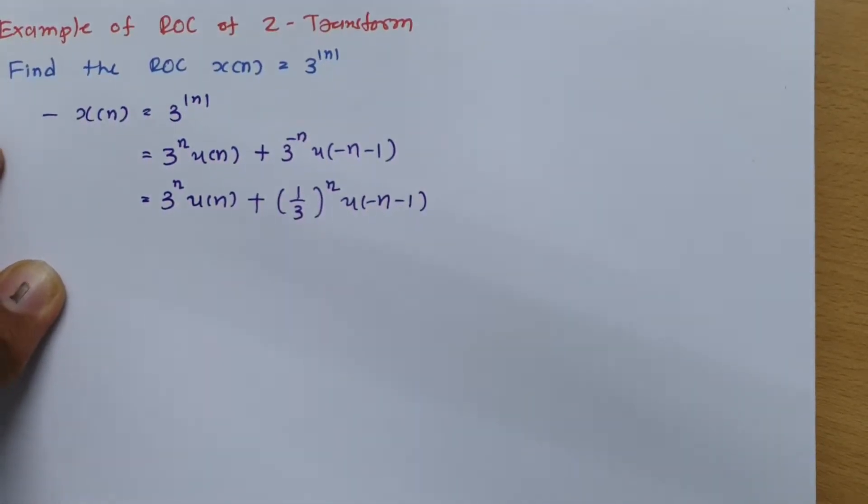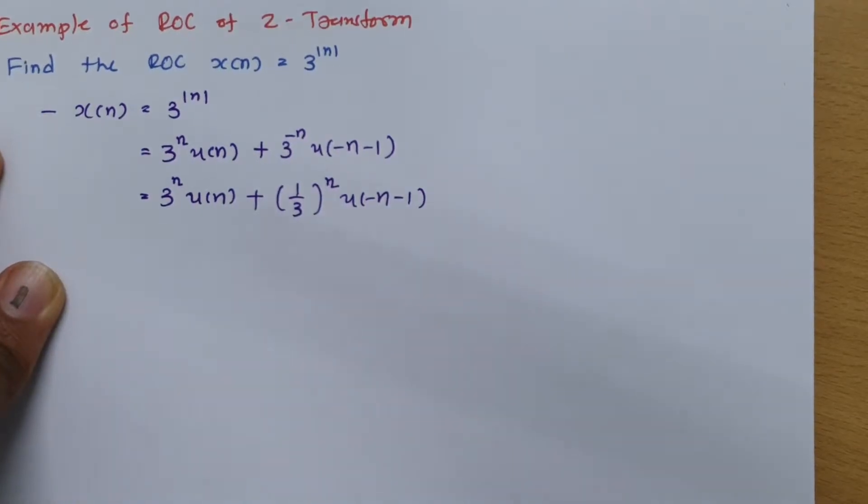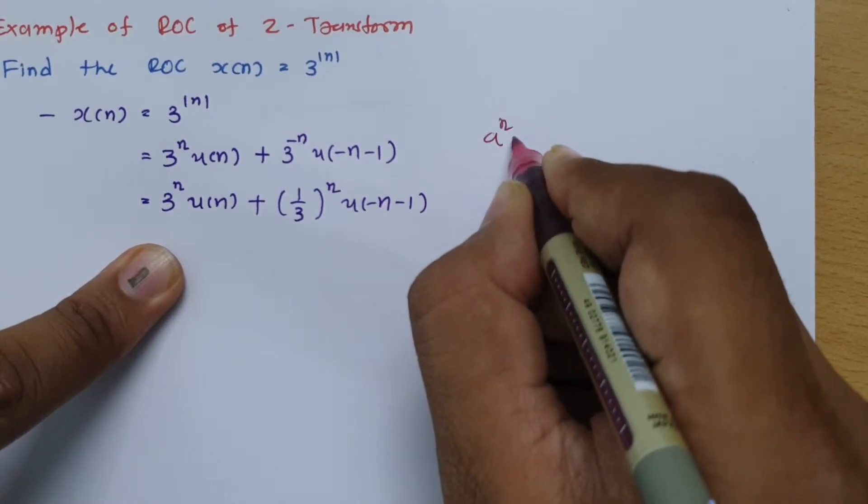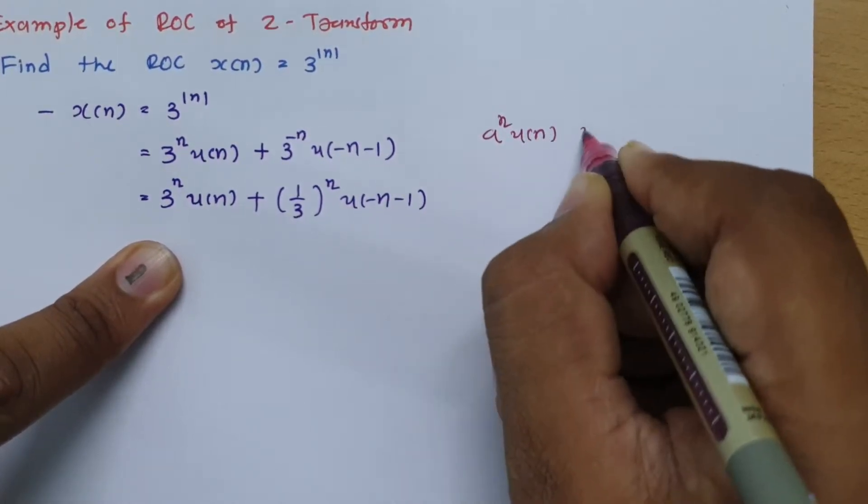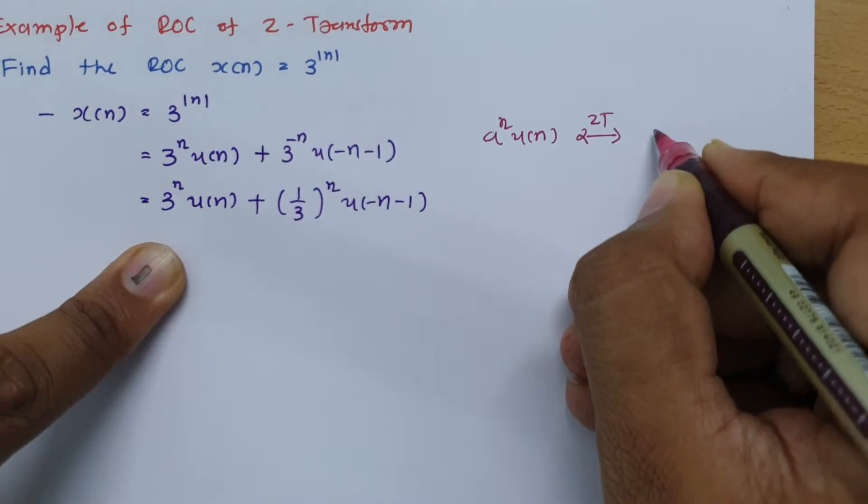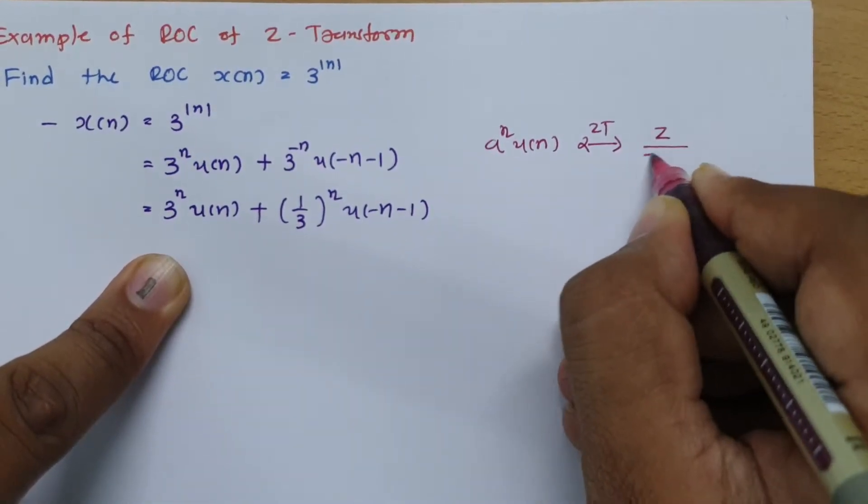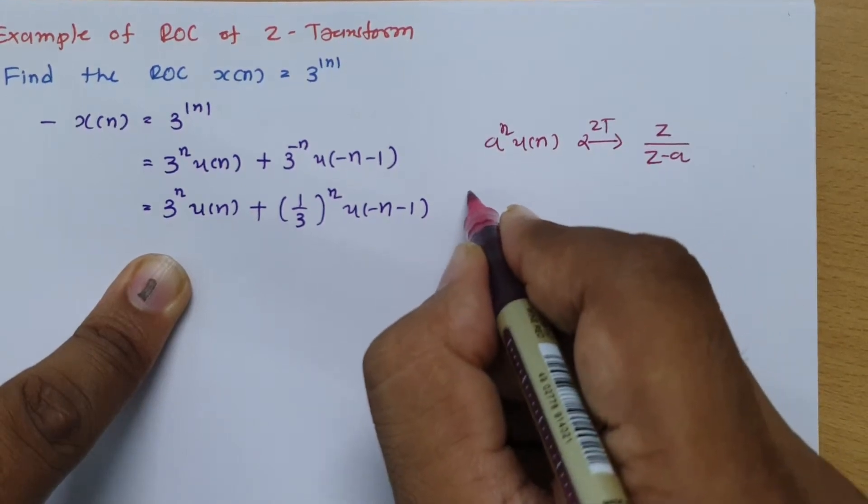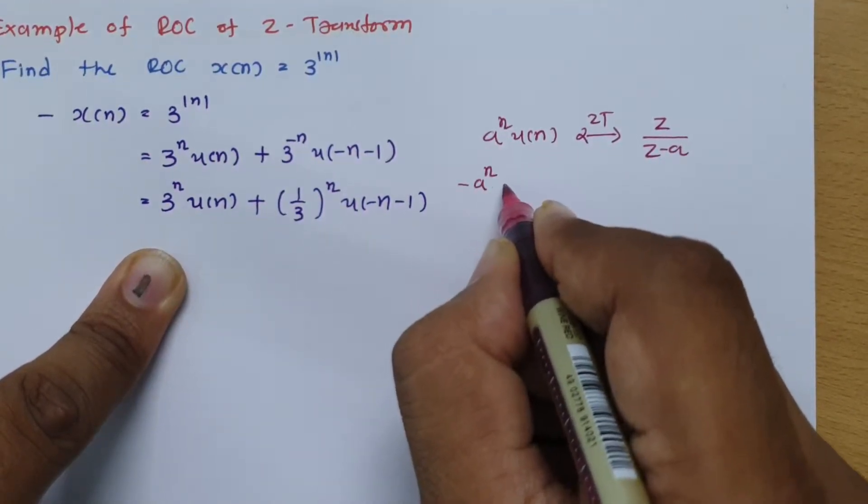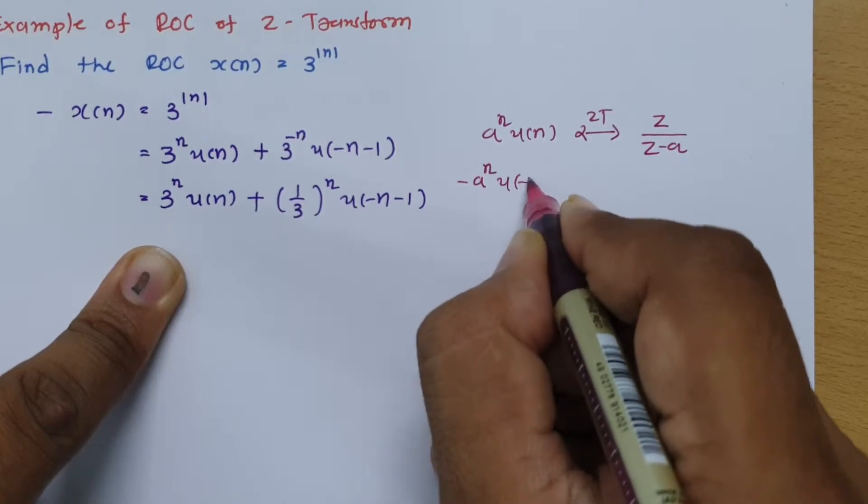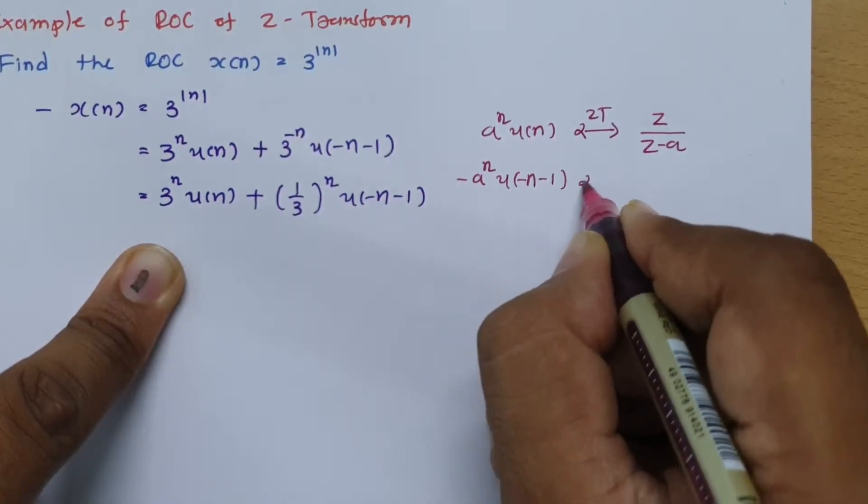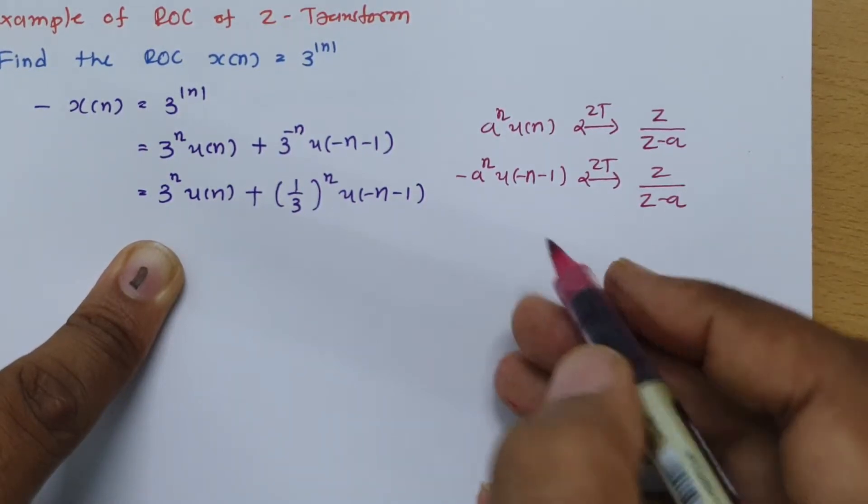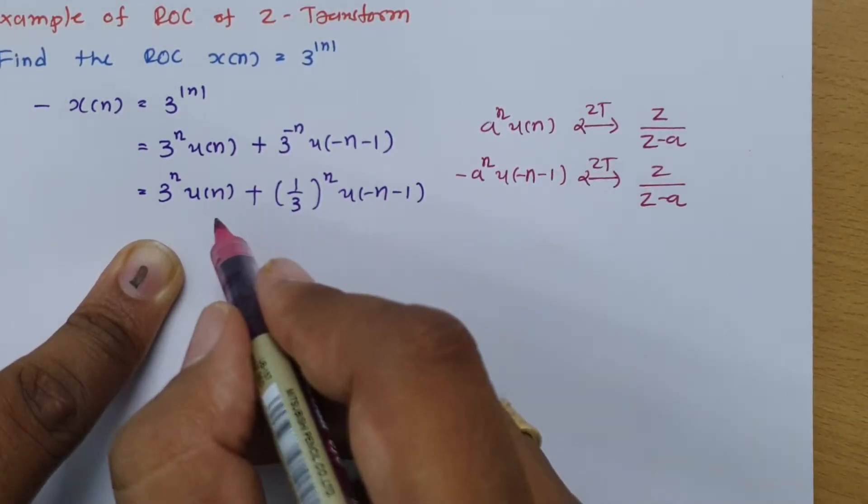As we know, Z-transform of A^n u(n) is Z/(Z-A), and Z-transform of -A^n u(-n-1) is Z/(Z-A). So these two formulas I can apply here.